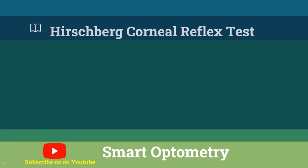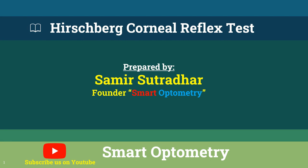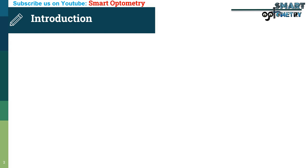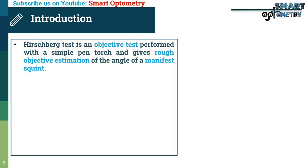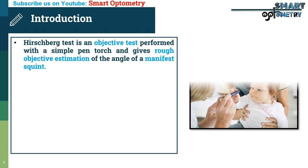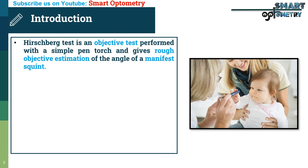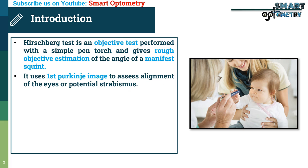Today I will discuss the Hirschberg corneal reflex test. The Hirschberg test is an objective test performed with a simple pen torch and gives a rough objective estimation of the angle of a manifest squint. It uses the first Purkinje image to assess alignment of eyes or potential strabismus.